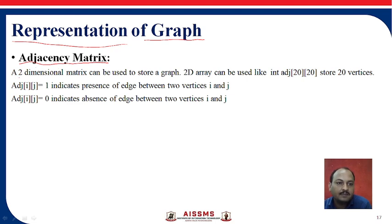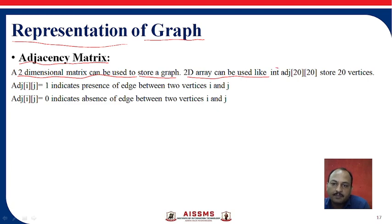According to the matrix, we are going to consider a two-dimensional matrix that can be used to store the graph. A two-dimensional array of data type integer — that is the adjacency matrix — with an array size of 20x20 can store up to 20 vertices.